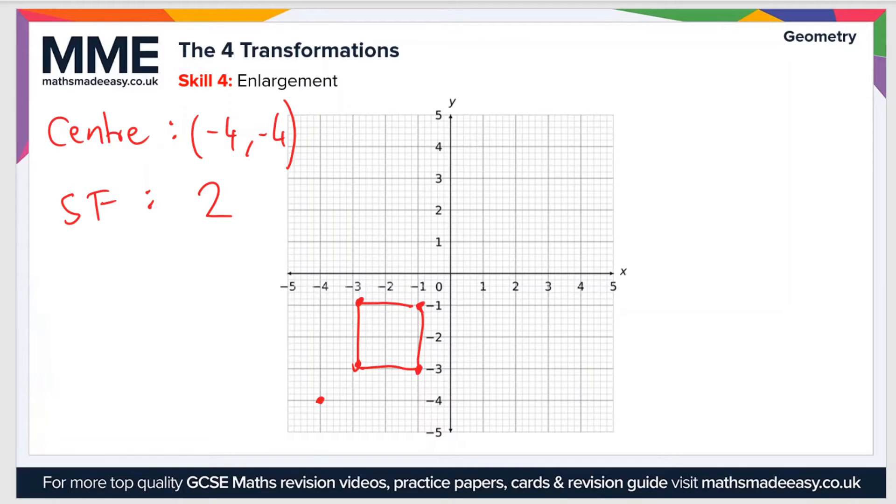We'll make a note of them on the shape here. The first point we'll track is at the top left corner of the square. Let's draw a line from our center of enlargement to the top left corner of the square. Now what I mean by track the point...